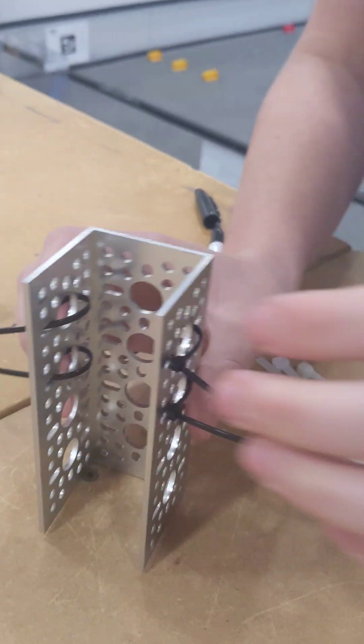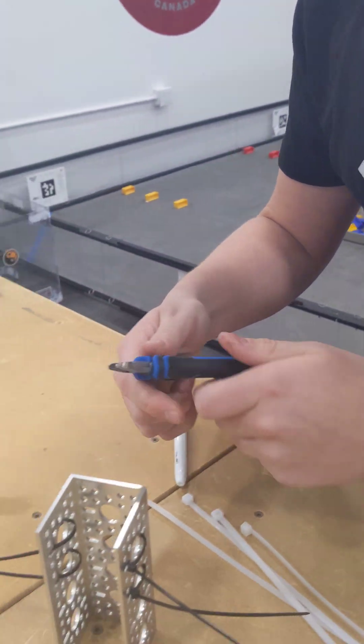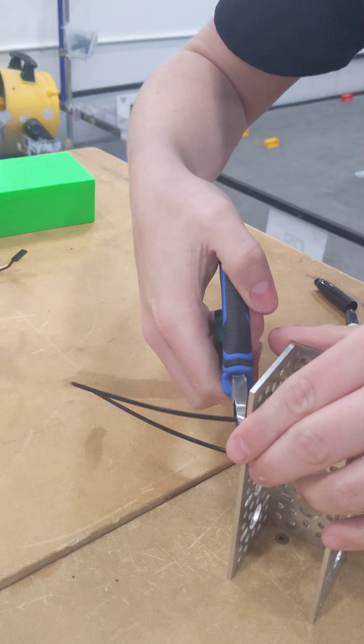Okay, there you go. And now what you want to do is take out your zip tie cutters like this and you just snip off all the ends.